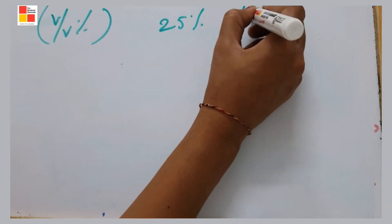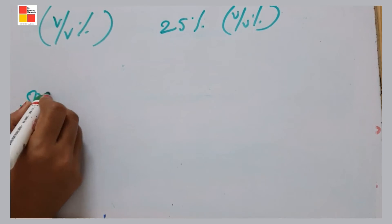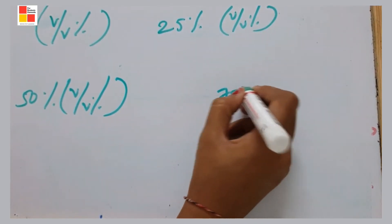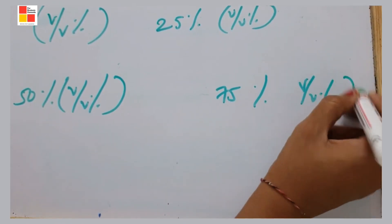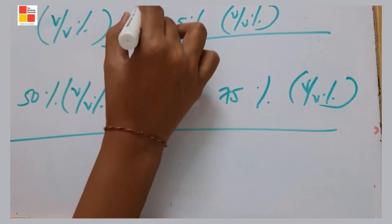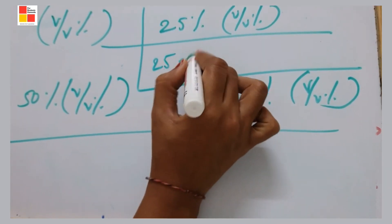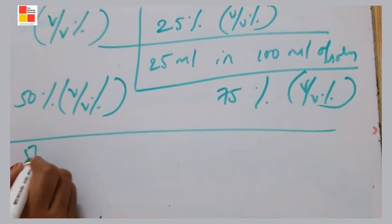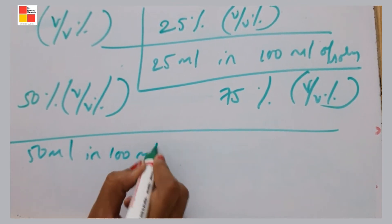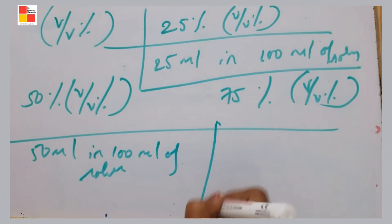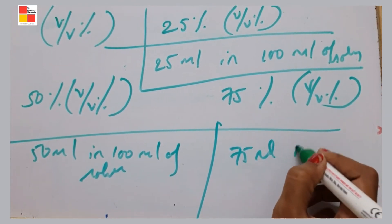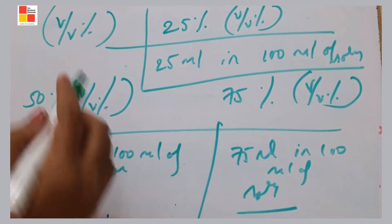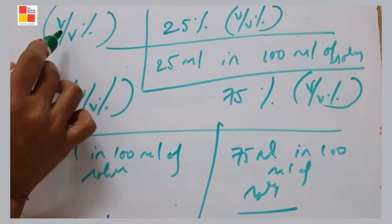So 25% volume by volume means 25 ml in 100 ml of solution; 50% means 50 ml in 100 ml of solution; 75% means 75 ml in 100 ml of solution.